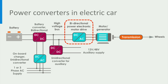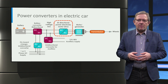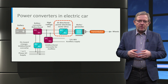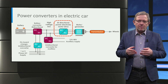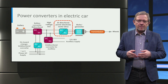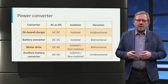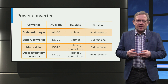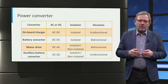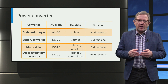The motor drive is bidirectional and feeds power to the motor for propulsion, and acts as an AC to DC rectifier by drawing power from the motor during regenerative braking. In some cases, the motor drive can be a DC to DC converter if the motor is a DC motor, like a brushless DC motor. This table gives an overview of the power converters in an electric car and their characteristics for AC and DC power flow, power flow direction, and isolation.